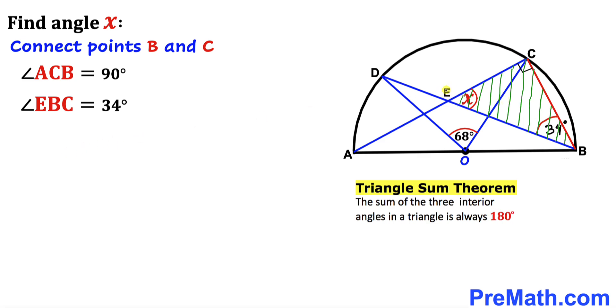Let's write down: this angle is X, this angle is 90 degrees, and this angle is 34 degrees. So angle X plus 90 degrees plus 34 degrees must be equal to 180 degrees.